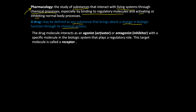There are agonists and antagonists when you talk about pharmacology and drugs or these substances. An agonist activates — it turns on a process. An antagonist turns off or inhibits a process from happening.